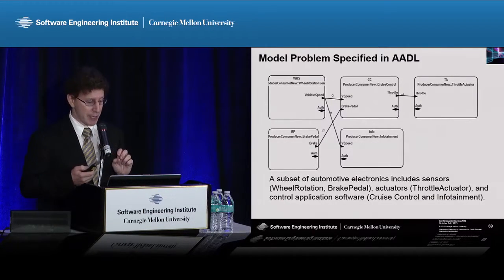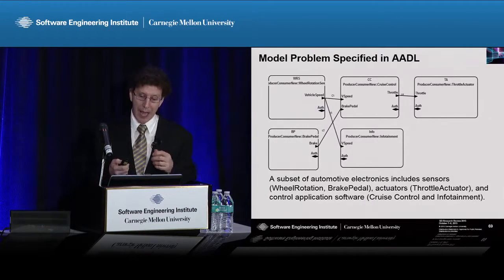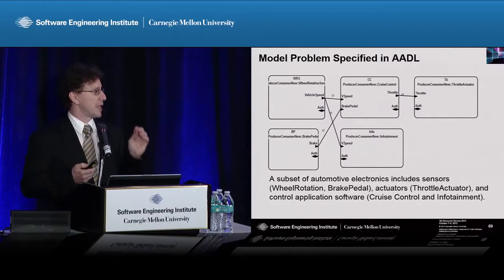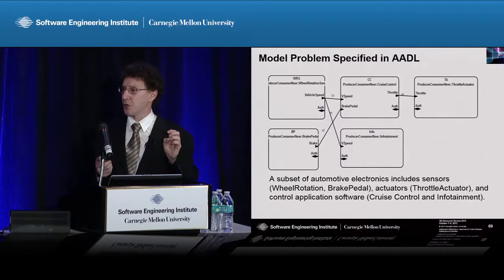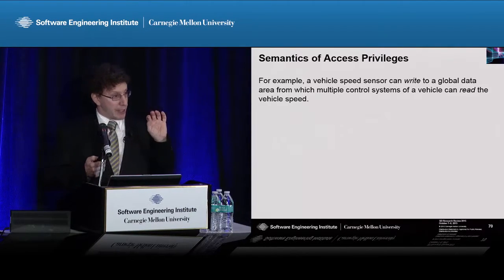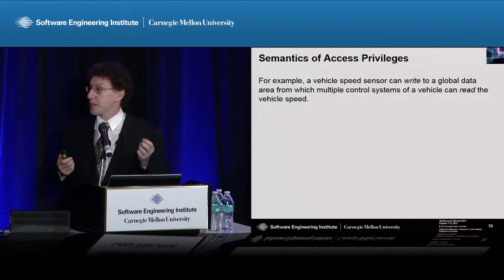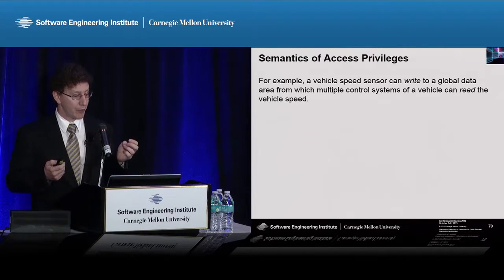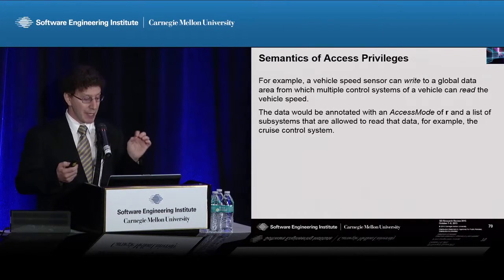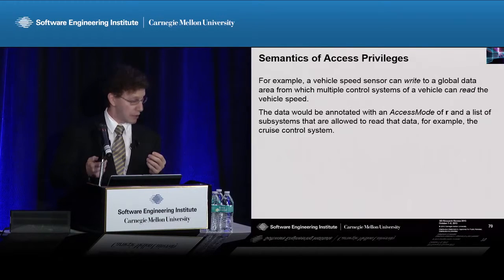Here's a little piece of the model specified in AADL. You can see there are sensors — wheel rotation sensor, brake sensor — actuators like the throttle actuator, and control software like cruise control, and the infotainment system, the bit of automotive electronics that a driver actually interacts with. To make this example more concrete: a vehicle speed sensor has to be able to communicate its speed to other components, so it might write to a global data area from which multiple other parts of the automotive electronics can read.